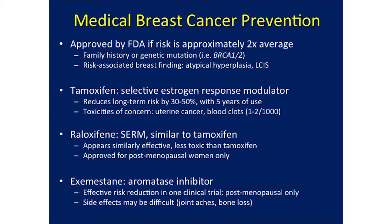There are also agents for medical breast cancer prevention. Drugs like tamoxifen and raloxifene — selective estrogen response modulators — and exemestane are drugs used to treat breast cancer but are also good options for preventing breast cancer in high-risk women, and tend to be underused.